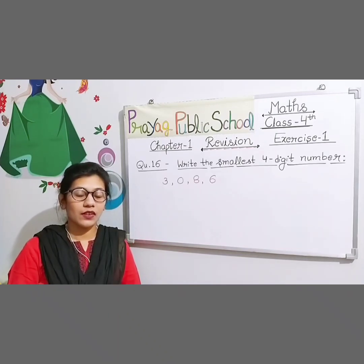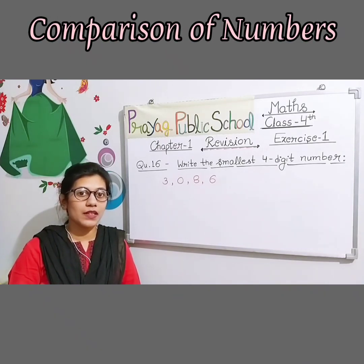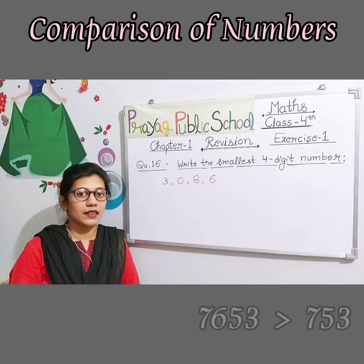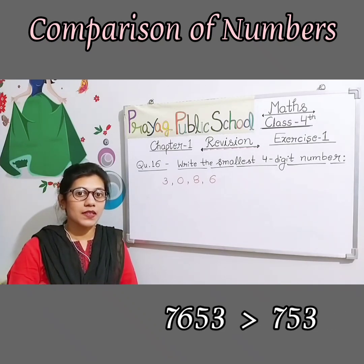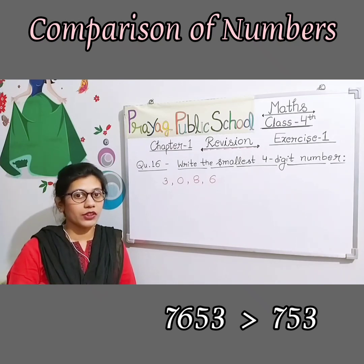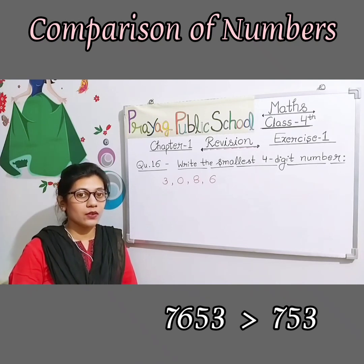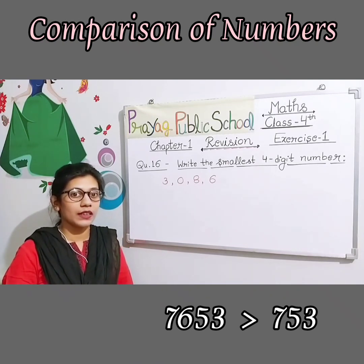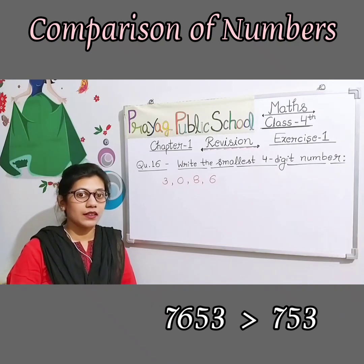So students, in our previous session we have discussed about comparison of numbers. How do we compare numbers? When we compare two numbers, we check if they are equal, small, or bigger. We count the digits, and after that we check the place value according to which number is bigger. Based on this, we have solved the ascending and descending order.